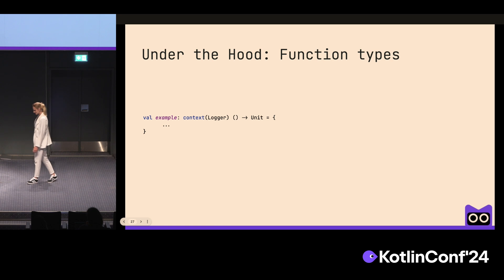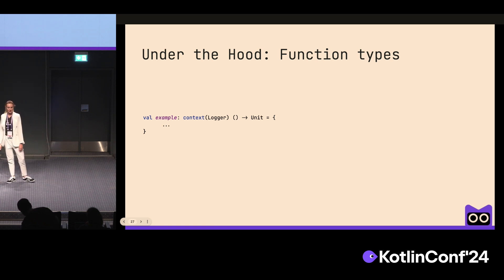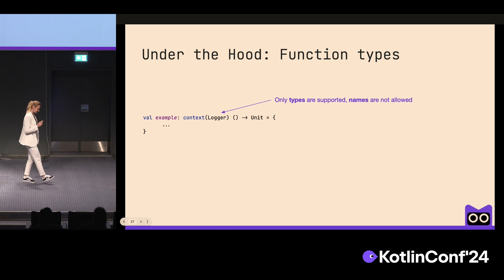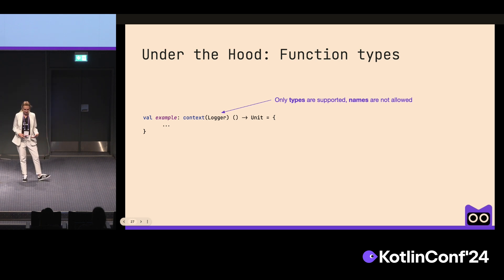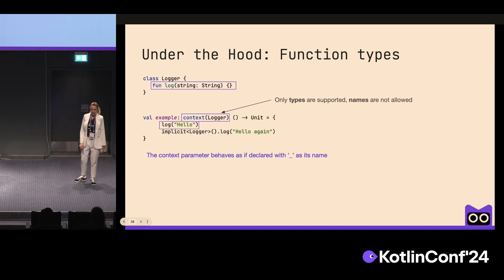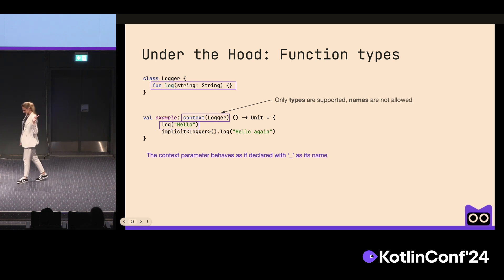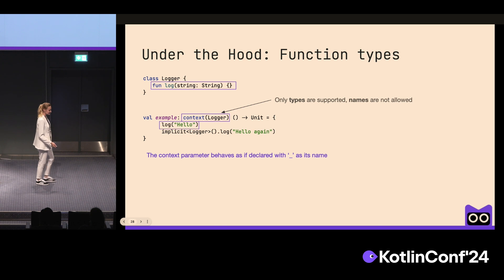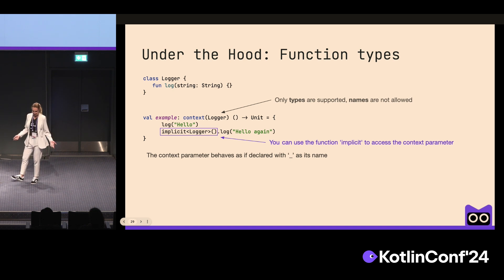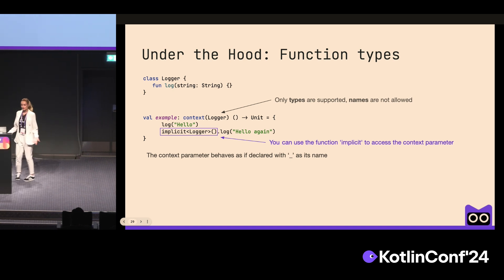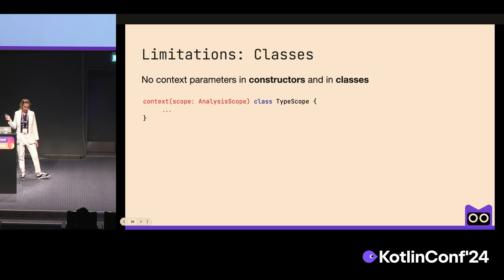Now let's talk about technical details. Function types are extended with context parameters, and as you can see, it is only possible to mention types — names are not supported. This is because we don't want to inspect the body of a lambda to find names during overload resolution. In lambdas, context parameters behave as if declared with an underscore as their name. In this example, the function called log doesn't require an extension receiver because the logger exists implicitly in the caller's scope. If you want to specify that you're using a function or property from a context parameter, you can use the special function called 'implicit'.